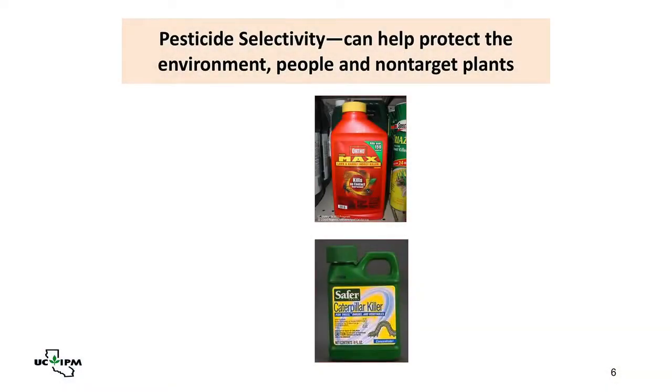Some people say, "It's a herbicide, not a pesticide." But a herbicide is a type of pesticide. One important thing to know about a pesticide when you're using it is what its selectivity is. That can help you choose which pesticide to use and determine how it might impact the environment.